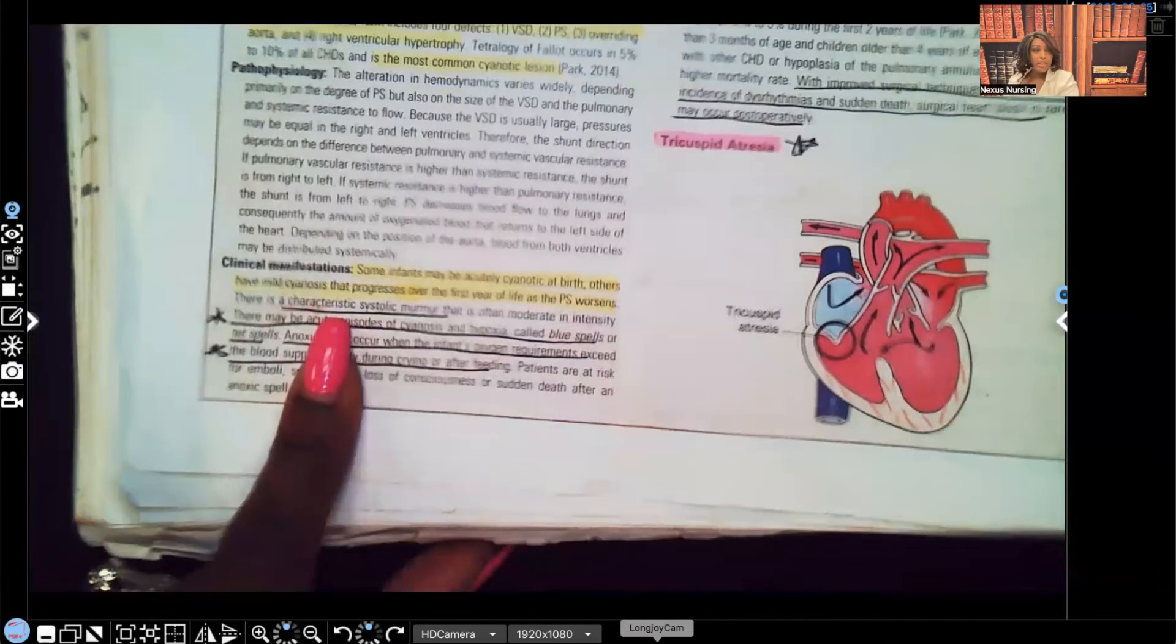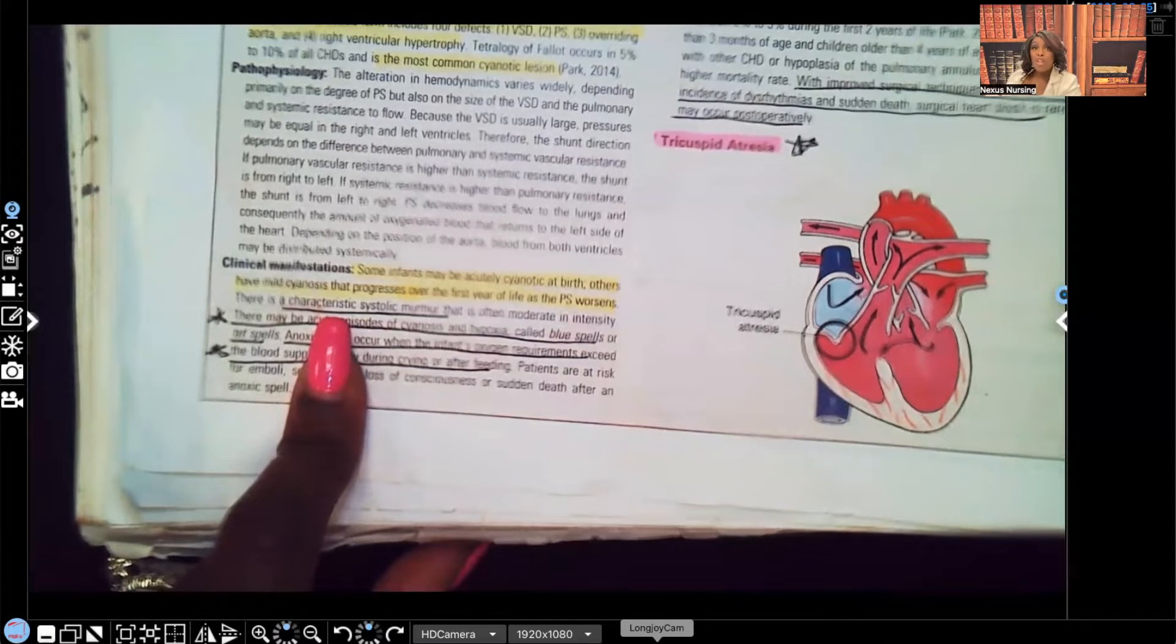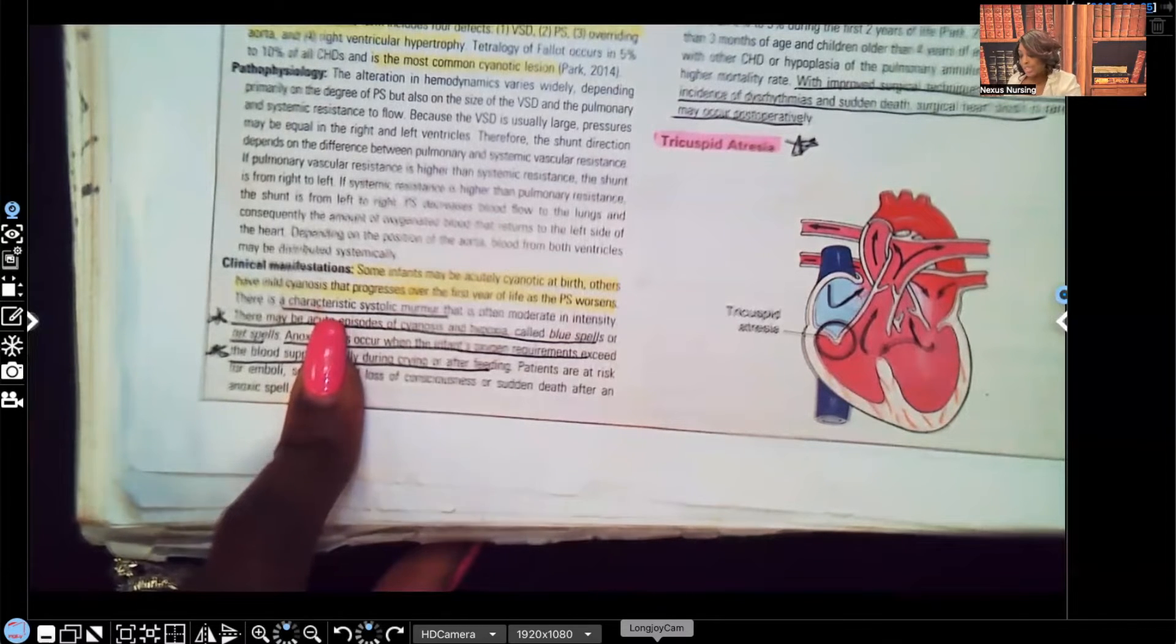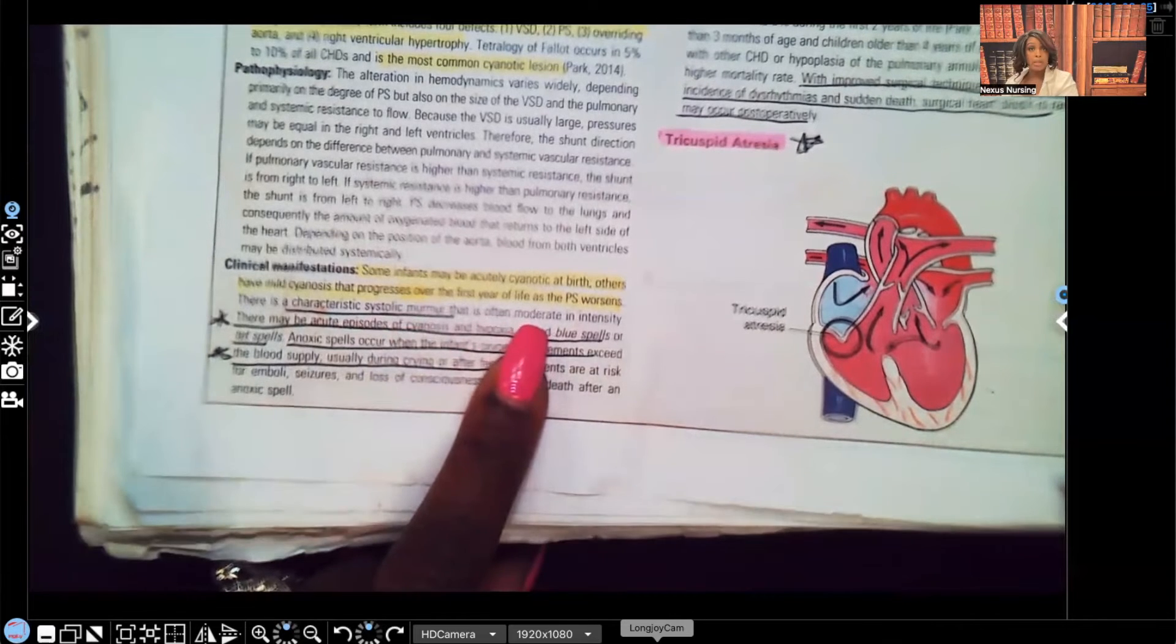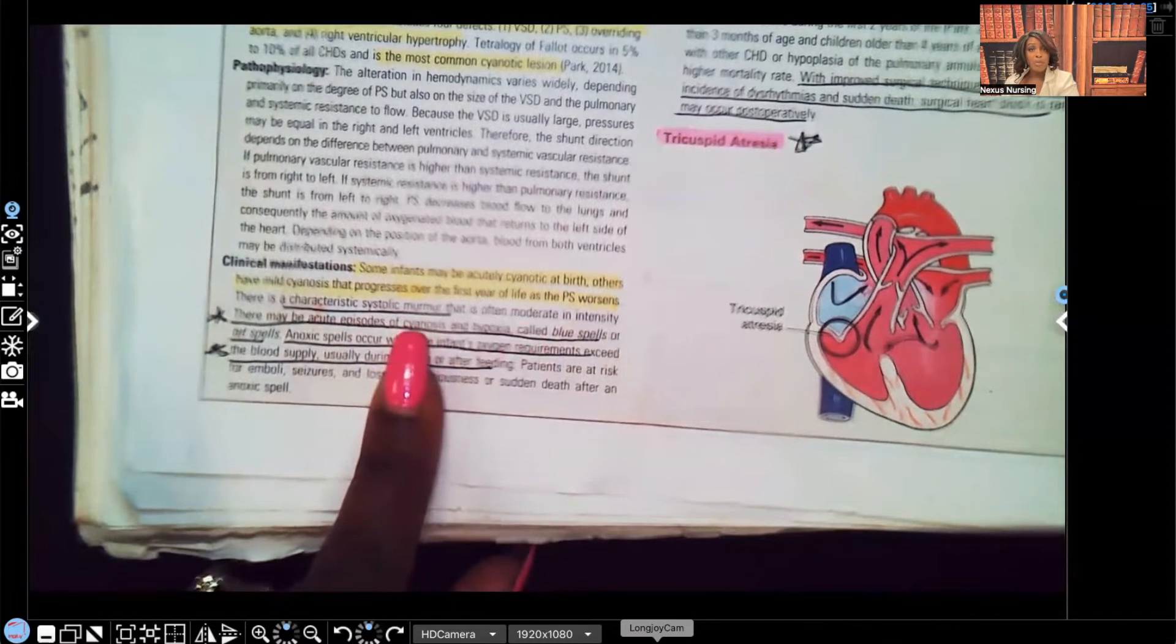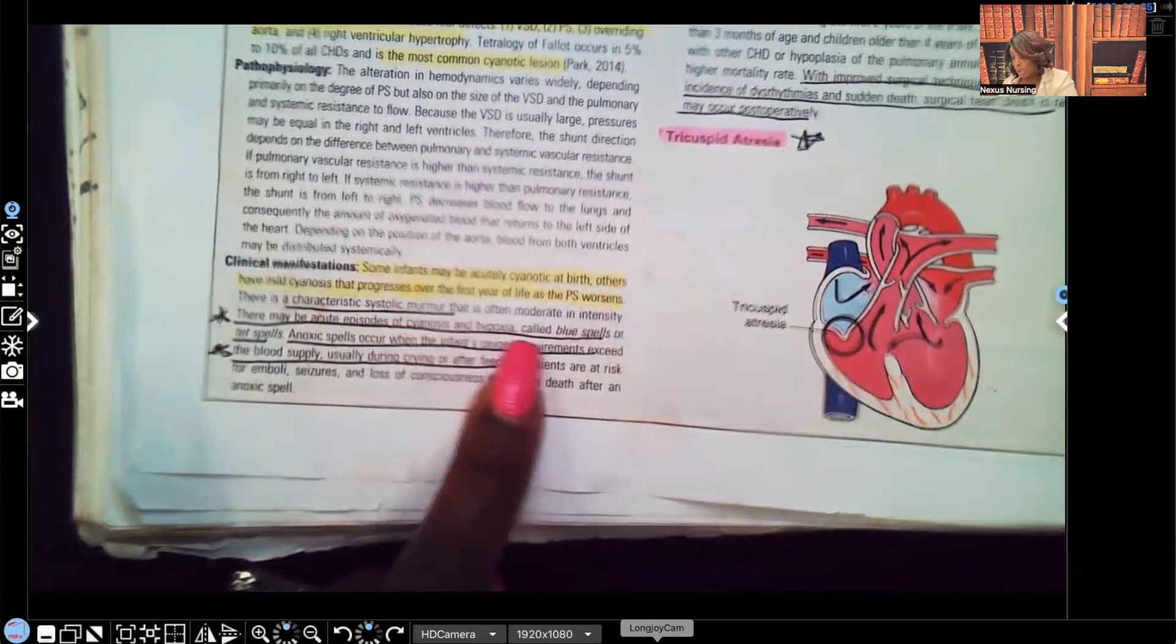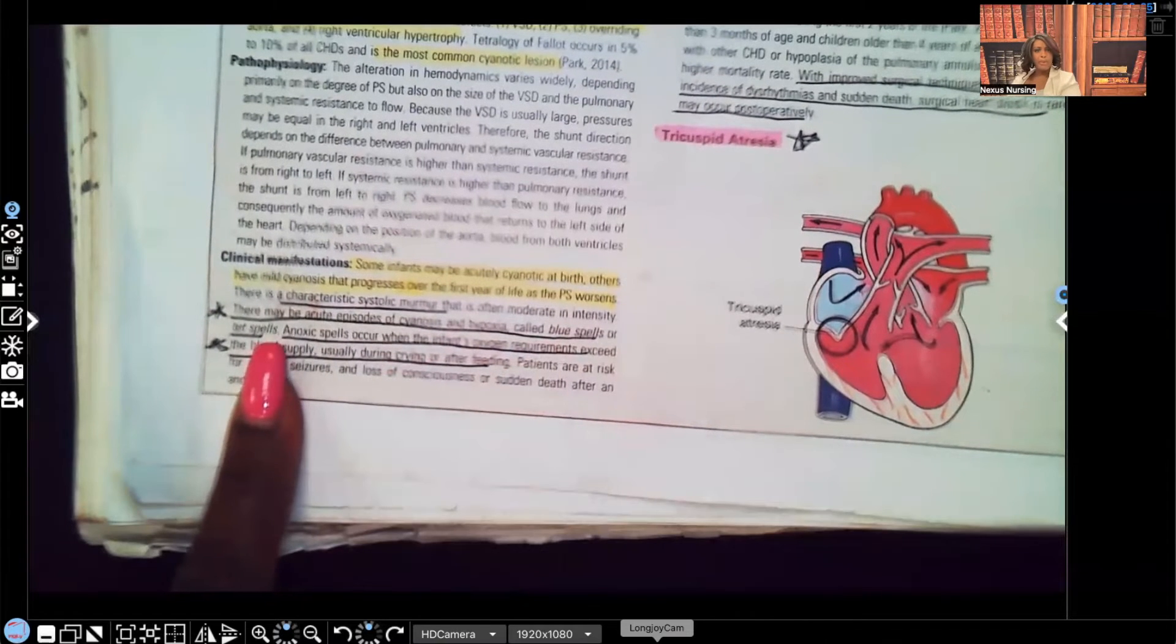There is a characteristic systolic murmur. What did I tell you about that word characteristic? When you are studying and you see them tell you something's characteristic, stop, read it again, pay attention. That means it's important for you to know. There's a characteristic systolic murmur that's often moderate in intensity. So systolic murmur has been linked to Tetralogy of Fallot. There may be acute episodes of cyanosis and hypoxia called blue spells or tet spells.